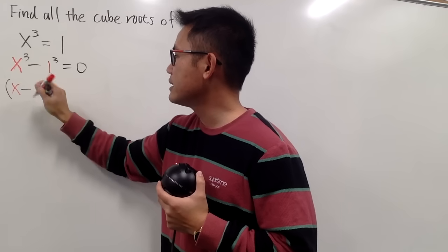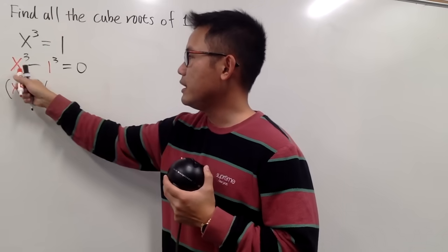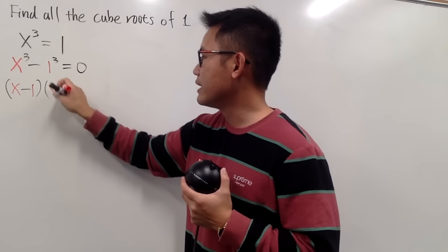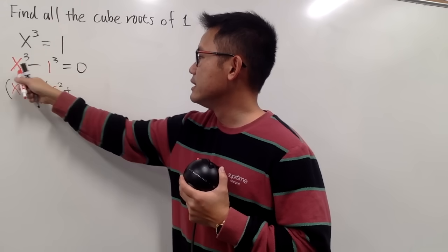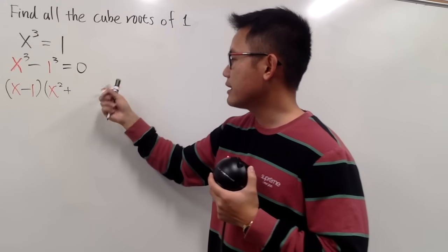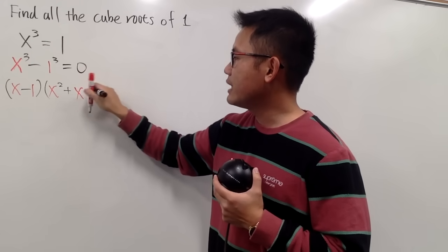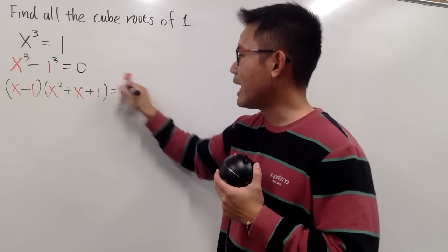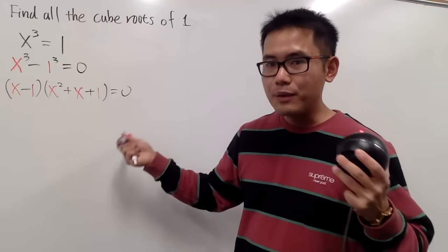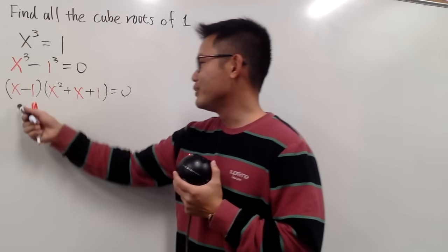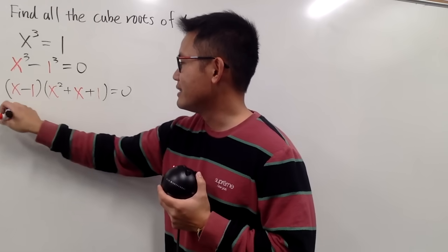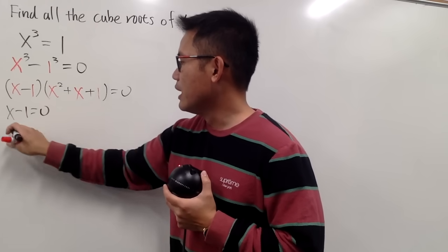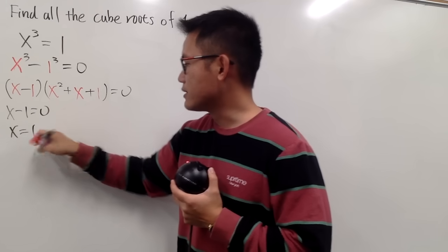The second factor is x squared plus x times 1, just x, and then plus 1 squared, which is still 1. So this is what we have. Now let's do the usual business. Set each factor equal to 0, so x minus 1 equals 0, and of course x is equal to 1.